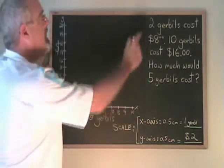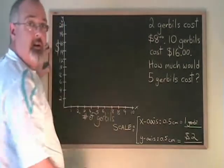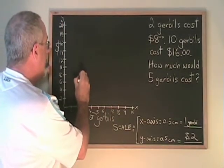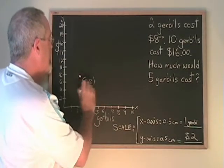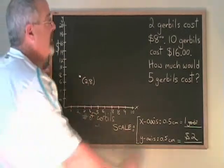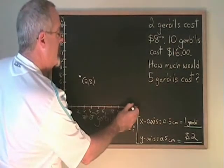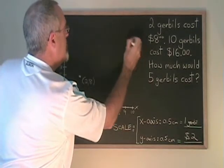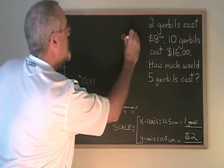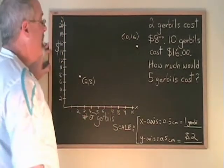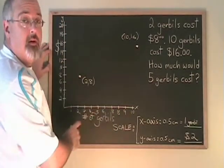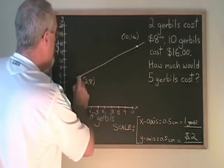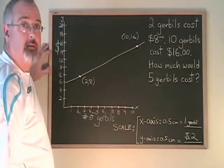Now let's graph our points. We know 2 gerbils cost $8. So I find 2 on the x-axis, 8 on the y-axis, and I put that dot and identify it. We know 10 gerbils cost $16. 10 on the x-axis, 16 on the y-axis. We put a dot. I identify that point. And now, using a ruler, which I don't have, we use the ruler to make a straight line all the way across the graph going through those 2 points.